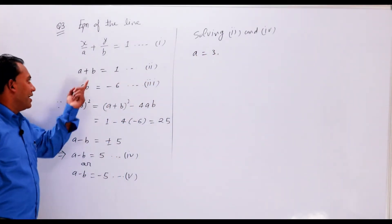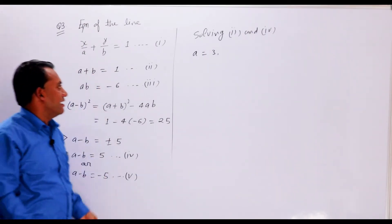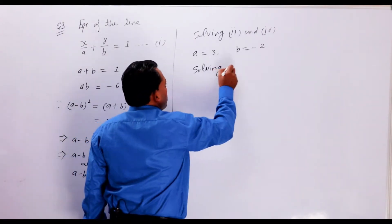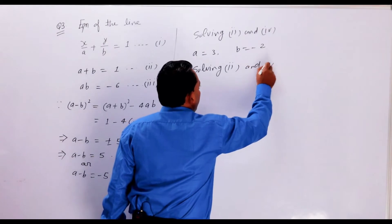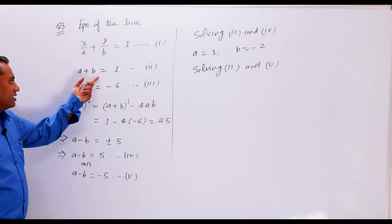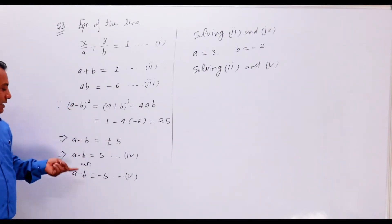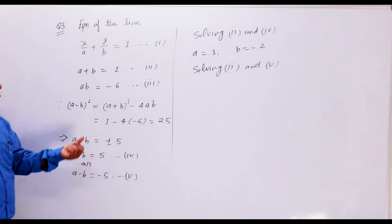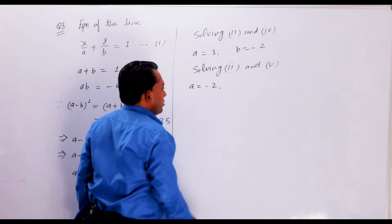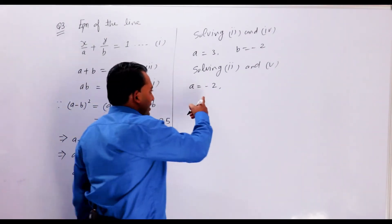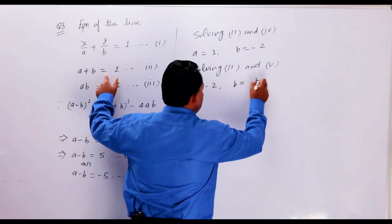When we put the value of A into the second equation, B comes out as minus 2. Now solving second and fifth equations: when you add them, B cancels. So 2A is equal to minus 4, therefore A is equal to minus 2. Putting this value of A into the second equation gives B equal to 3.